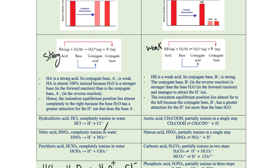These are some examples of dissociation equations. For acetic acid, it gives the acetate ion plus a proton. For nitrous acid, we get the nitrite ion plus H+. Here we have a diprotic acid — an acid that has two H+ ions to be donated. And the last example is phosphoric acid, a triprotic acid that has three H+ ions to be donated.